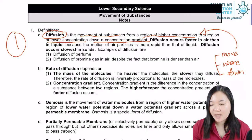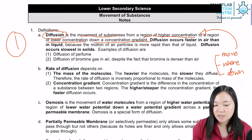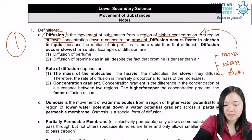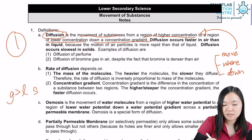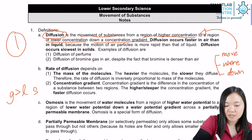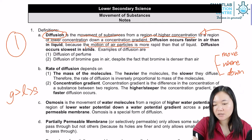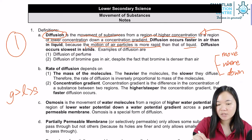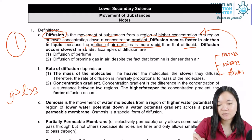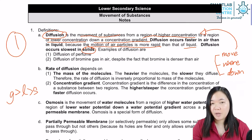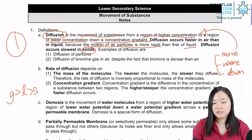Diffusion occurs very fast in air, slightly slower in liquid, and slowest in solid. So: gas, liquid, solid — movement of gas is faster than in liquid, and liquid is faster than in solid. The reason is that the motion of air particles is more rapid than that of liquid, and liquid's motion is more rapid than that of solid. Solid particles only vibrate about their fixed positions, so diffusion in solids is very slow.